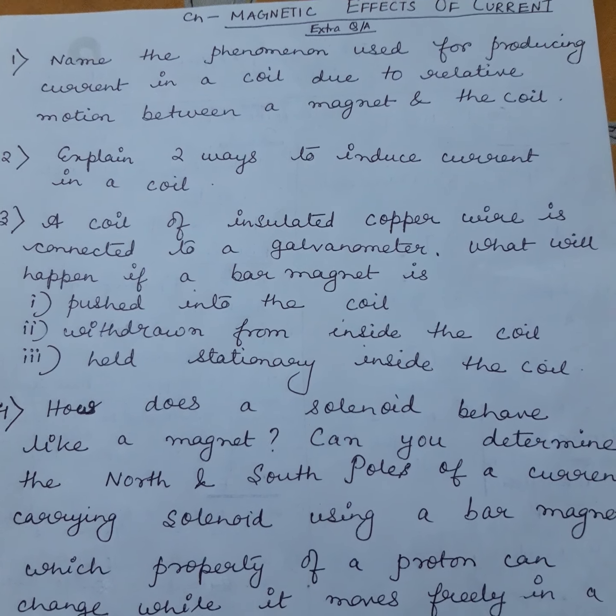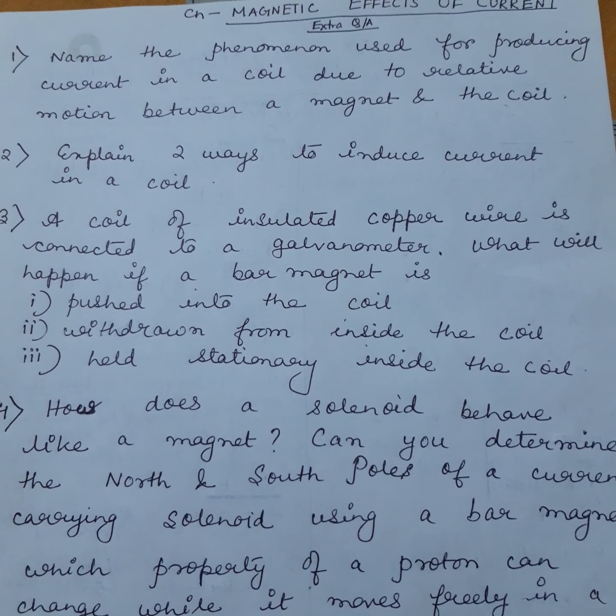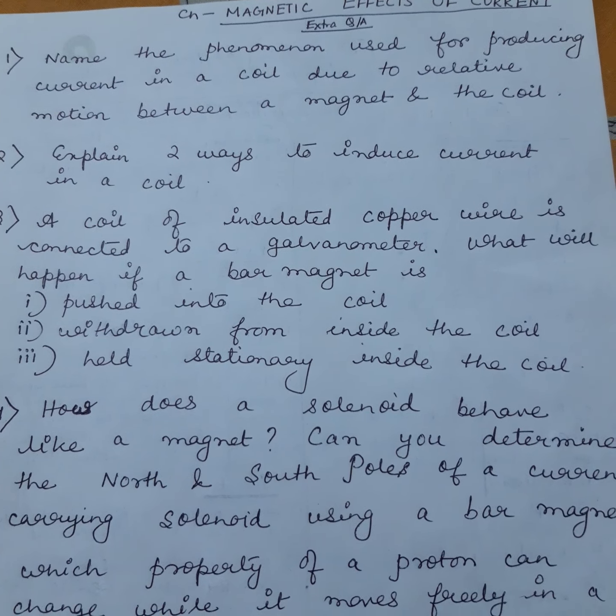Question two: Explain two ways to induce current in a coil. The first way is when a magnet is moved towards or away from the coil — any relative motion between the coil and the magnet induces a current in the coil. The second way is when the current passing through a coil changes, a current is induced in the nearby coil.